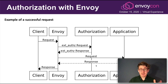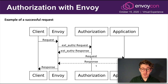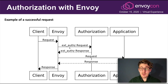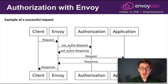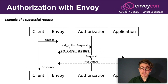For a successful request: the client sends a request which gets proxied by Envoy, which then calls the authorization service, receives a 200, then Envoy forwards the request to the application layer, which eventually returns the response to the client.